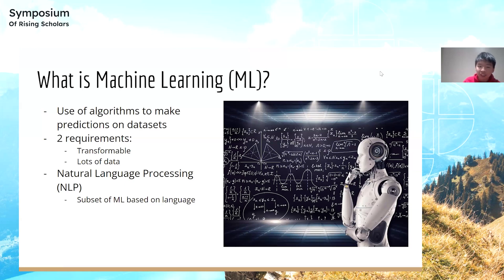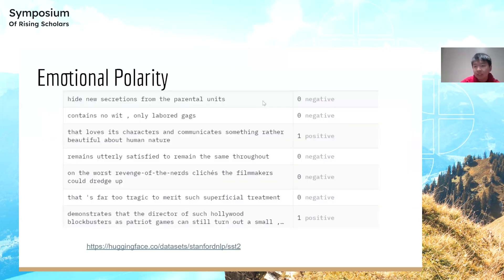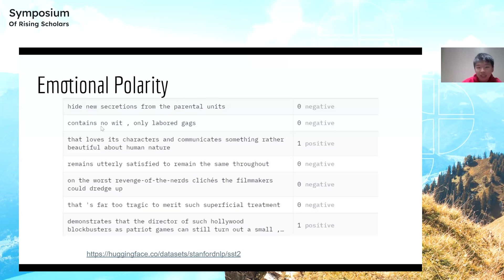This project focuses on natural language processing, which is a subset of machine learning based on language. Another key term is emotional polarity — whether a given text is happy or sad. The SST2 dataset, made by humans from Stanford, labels movie reviews as negative or positive. For example, 'contains no wit, only labored gags' is negative (labeled 0), while 'loves its characters and communicates something rather beautiful about human nature' is positive (labeled 1).